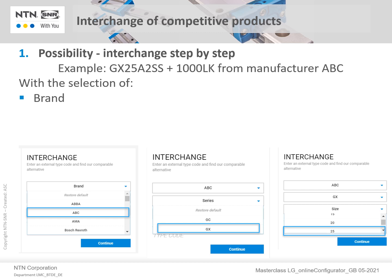Please note that there are more than 30 brands to choose from. Secondly, select the series to be interchanged. In this case, select the series prefix GX. Lastly, select 25 as the size to be interchanged and then hit the Continue button.